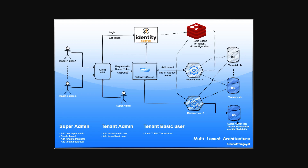Depending on the scenario, tenant 1 may need only 1 GB and tenant 2 may need more. Whenever a tenant is created, the data is saved in the DB and also in Redis cache so the same information can be used across multiple microservices without hitting the master DB repeatedly. Every operation needs to check the connection string, and doing that by hitting the master DB every time is not good practice since the data doesn't change.